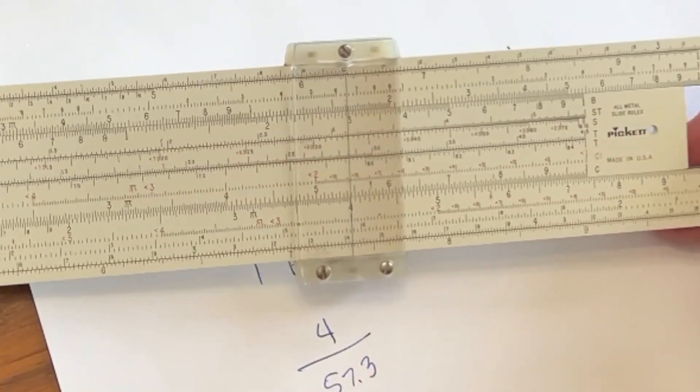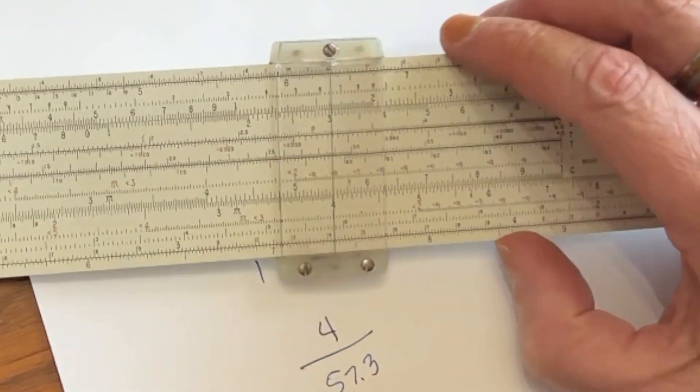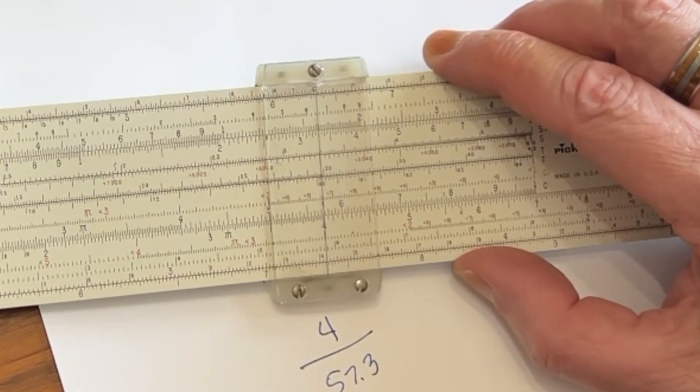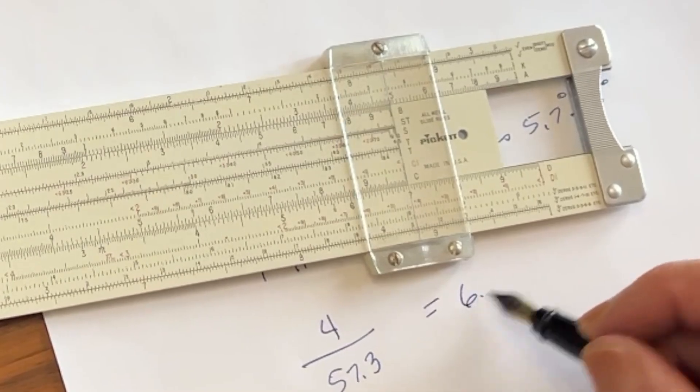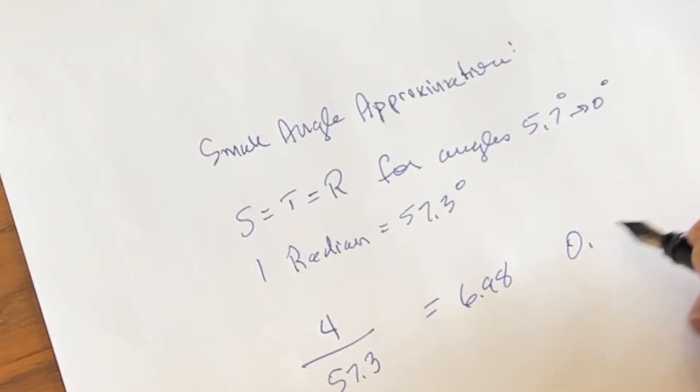Now on most slide rules, including this one, you'll see that there's a little R right here. And that is the gauge mark for radians. So we just come right to that. Now according to this, the sine is going to be 6.98. So what, 6.98 what? Well, it's going to be 0.0698.